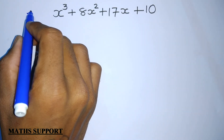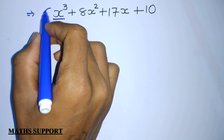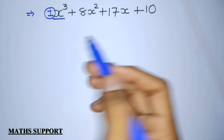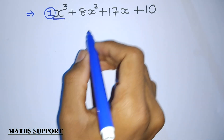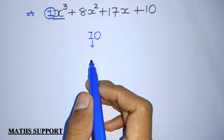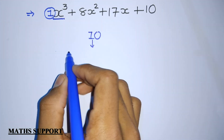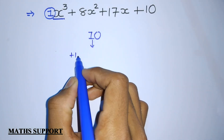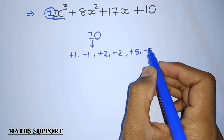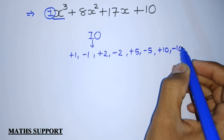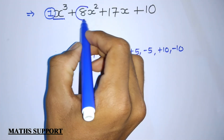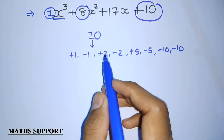One thing to keep in mind: the coefficient of x cubed should be 1 — if not 1, that will be discussed further. Here the constant term is 10, so we write the factors of 10 in plus and minus form: 1, 2, 5, 10, giving plus 1, minus 1, plus 2, minus 2, plus 5, minus 5, plus 10, and minus 10. We need to select three values such that their addition is 8 and multiplication is 10.